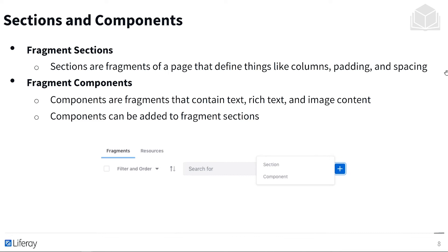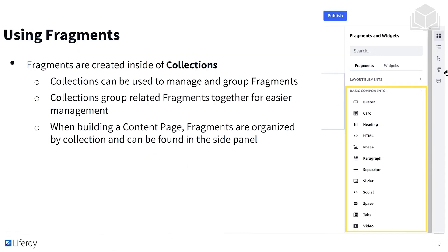Down here on the right, when creating a new fragment for the first time, you have the option to create either a section or a component. We have a section on the right of our editor called Fragments and Widgets, where you can choose between two tabs. This is where fragments are stored inside of collections. Collections can be used to manage and group related fragments together for easier management. When building a content page, fragments are organized by collection and can be found in the side panel.